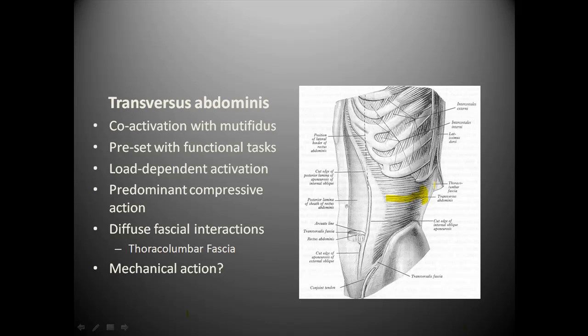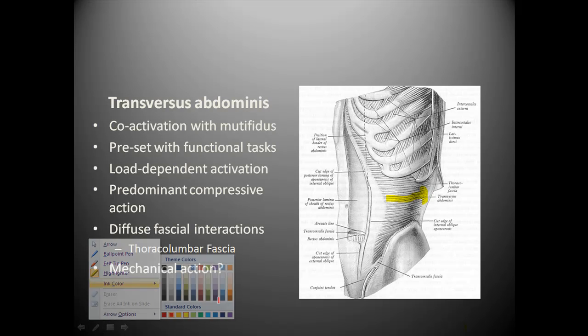We know from Paul Hodges and Gwen Richardson Jull's work that the transverse abdominus and the multifidus work in a synergic fashion, so they co-activate in terms of facilitating spinal support. But we need to have an understanding of what the effect of muscle contraction of the transverse abdominus is on the thoracolumbar fascia. The muscle contraction of transverse abdominus will pull on the thoracolumbar fascia.